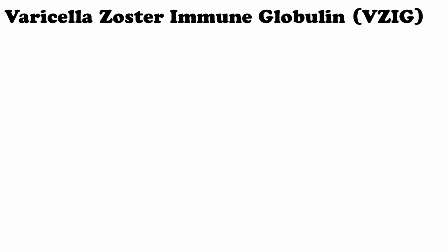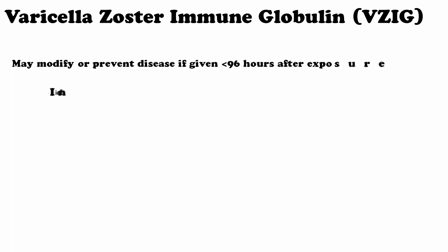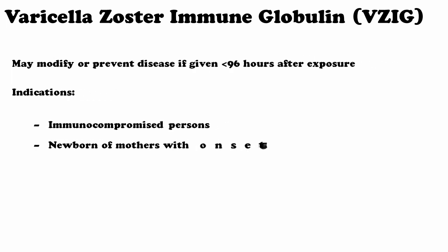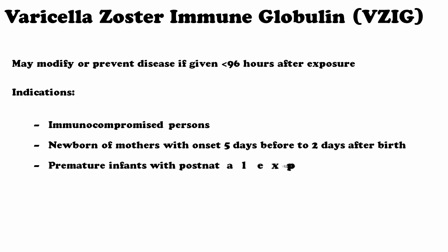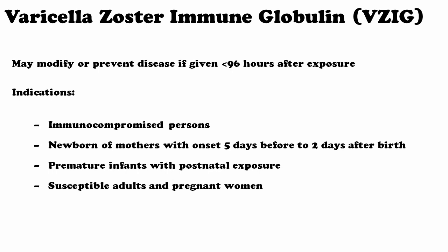Another and last approach of treatment is Varicella Zoster Immunoglobulin, which is a passive form of immunity — that is, ready-made antibodies are given to a person showing symptoms due to some kind of exposure to the patient. It has specific conditions for use: immunocompromised persons, newborns of mothers with onset five days before to two days after birth, premature infants with postnatal exposure, and susceptible adults or pregnant women. Treatment should be administered within 96 hours of exposure.